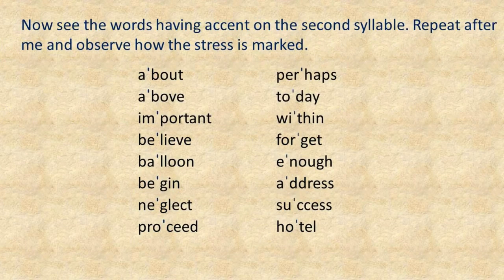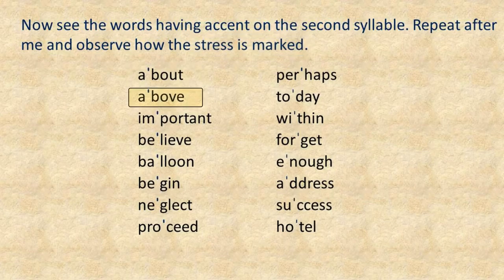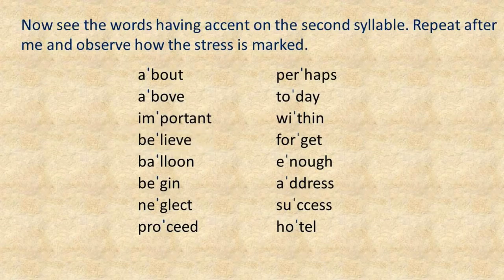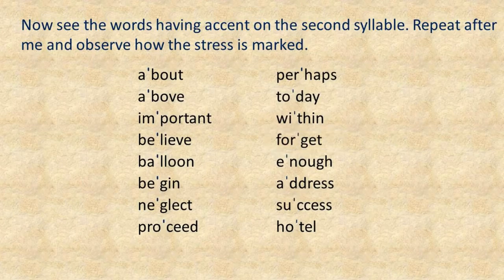Now see the words having accent on the second syllable. Repeat after me and observe how the stress is marked: about, above, important, believe, balloon, begin, neglect, proceed, perhaps, today, within, forget, enough, address, success, hotel.